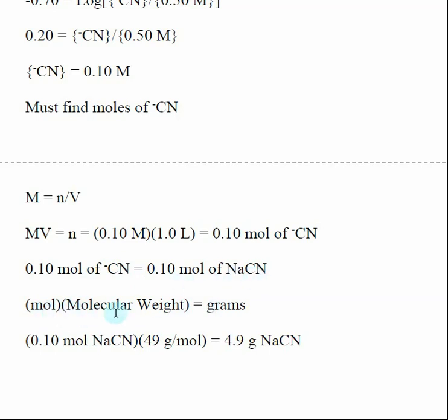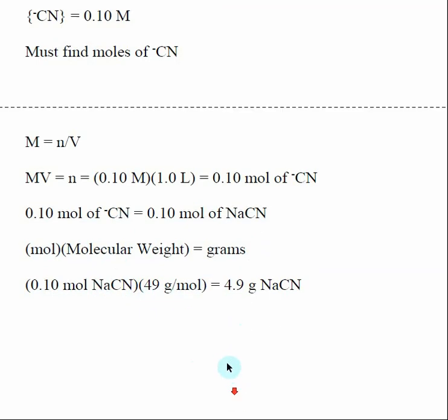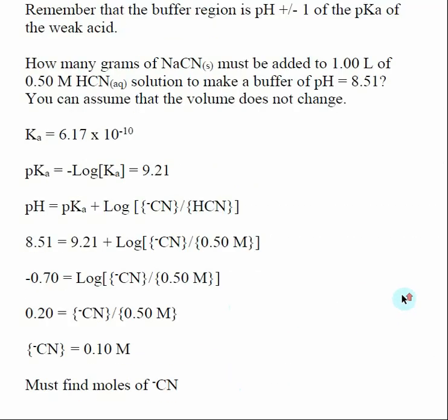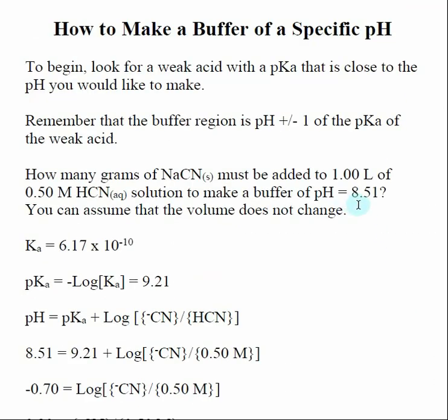So moles times molecular weight gives me grams. I know I need to add 0.1 mole of sodium cyanide. The molecular weight of sodium cyanide is 49 grams per mole. So I need to add 4.9 grams of sodium cyanide to my solution to cause the pH to be 8.51.